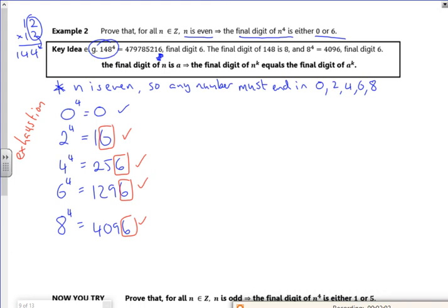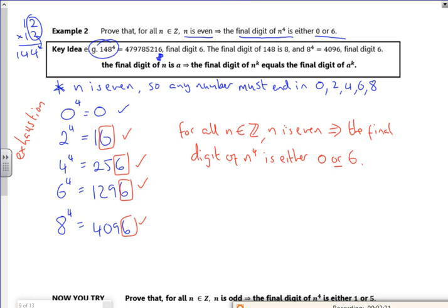Right. So for this one, by exhaustion, for all n belonging to the integers and n is even, the final digit of n to the four is either zero or six. There.